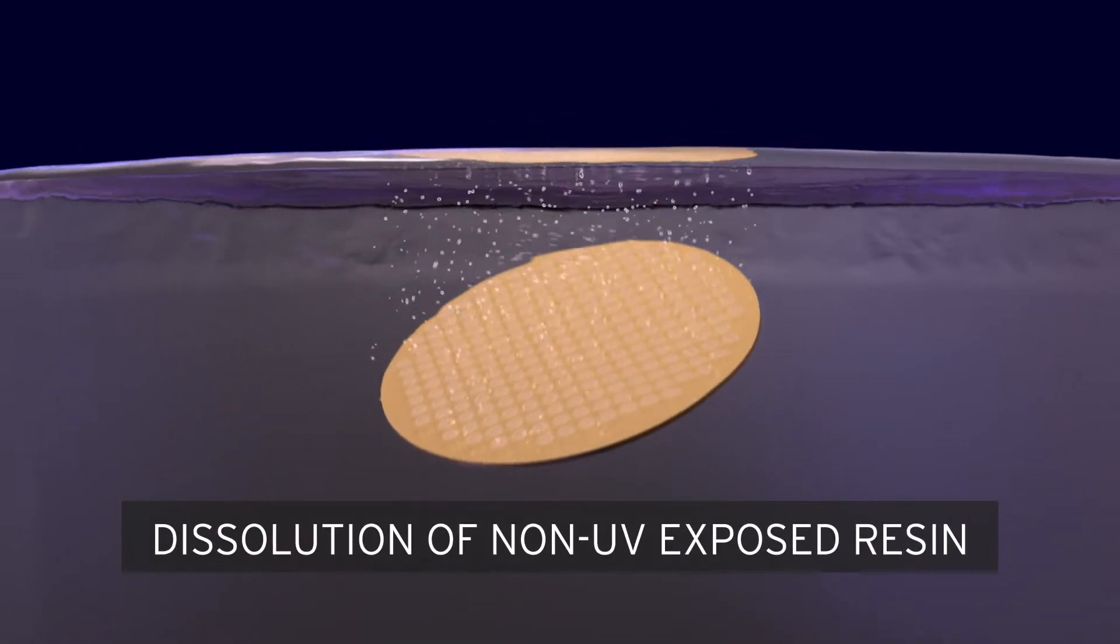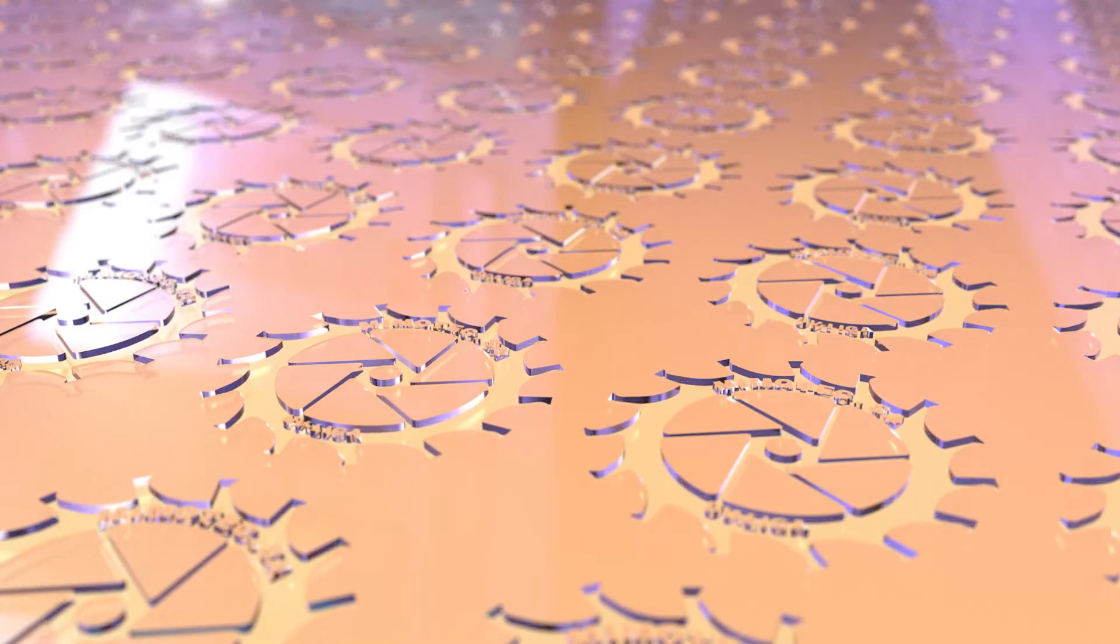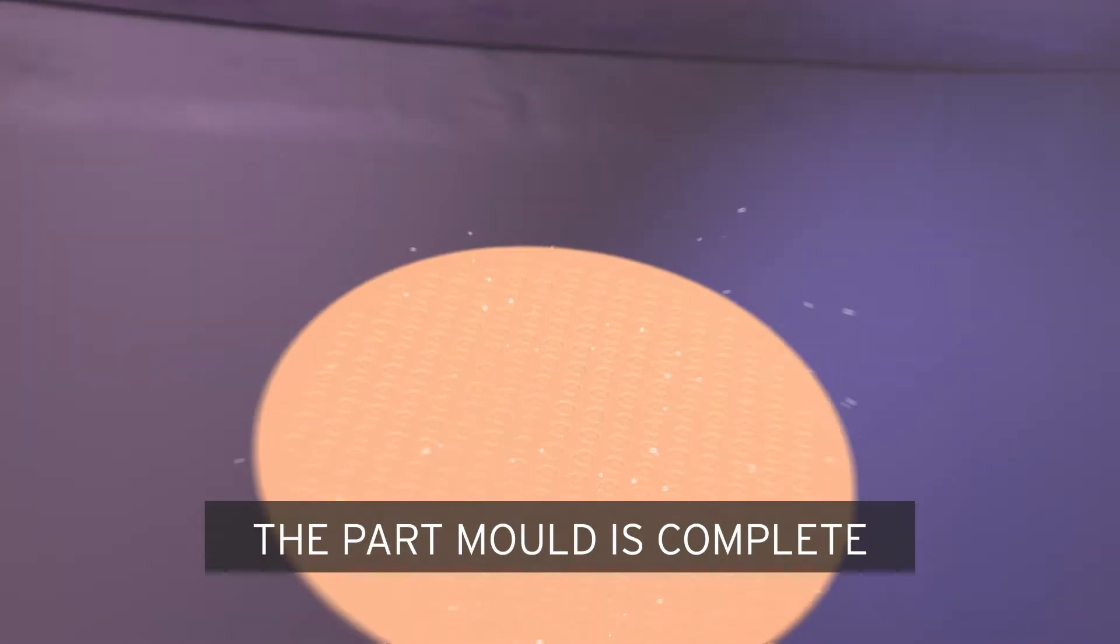The wafer is then immersed in a solvent to dissolve the non-polymerized resin. The part mold is now finished and ready to be filled with metal.